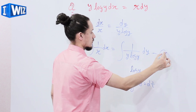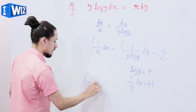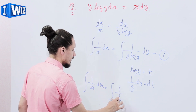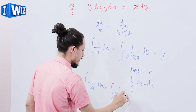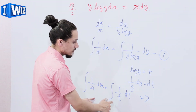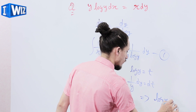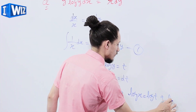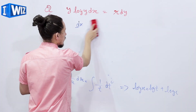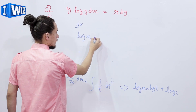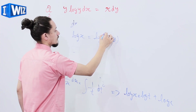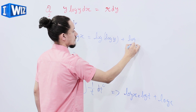Replacing this value in the equation, we get integral of 1/x dx = integral of 1/t dt. The integral of 1/x is log(x) and the integral of 1/t is log(t). So we get log(x) = log(t) + log(c), and since t = log(y), we have log(x) = log(log(y)) + log(c).